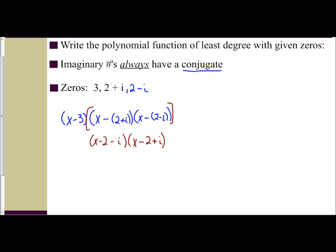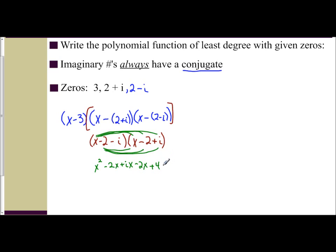Distributing x first: x times x is x squared, x times negative 2 is negative 2x, x times i is ix. That gives x squared minus 2x plus ix. Distributing negative 2: negative 2x, positive 4, and negative 2i. Distributing the negative i: negative ix, positive 2i, and negative i squared.